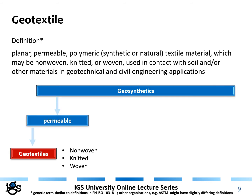A geotextile, according to the ISO definition, is a planar, permeable, polymeric, synthetic or natural textile material, which could be either a non-woven, a knitted material, or a woven material — always used in contact with soil and/or other materials in geotechnical and civil engineering applications. If a product has a textile structure, then it would be called a geotextile.